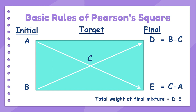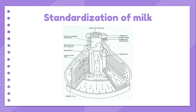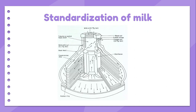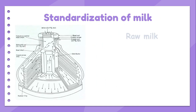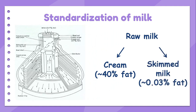One of the applications of Pearson Square is the standardization of milk. In the dairy industry, raw milk can be separated into two products: cream with about 40% fat, and skimmed milk with about 0.03% fat only. This can be done using a centrifugal separator.